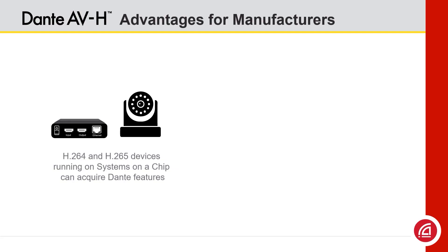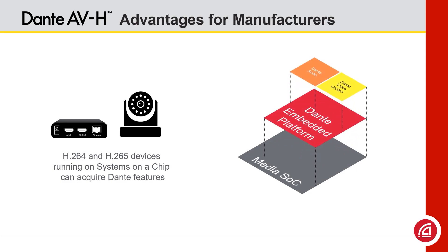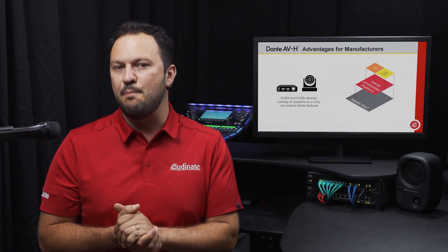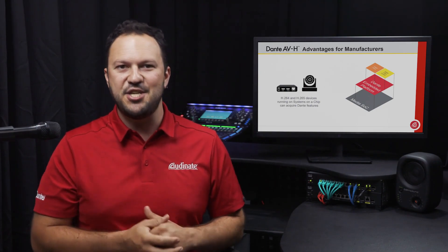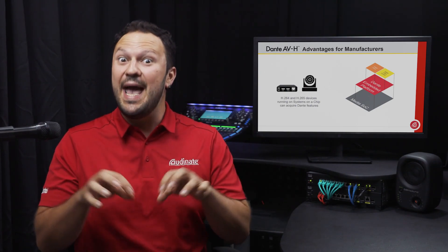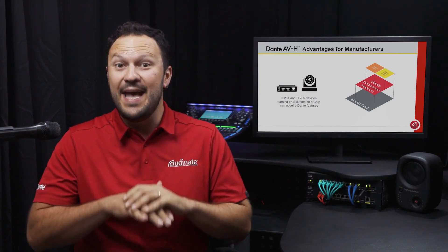If you're a manufacturer interested in Dante AVH, the implementation is simple and straightforward. Our experienced engineers have prepared an example API that can easily be accommodated in the firmware of your system-on-a-chip, enabling Dante AV features into H.264 and H.265 cameras, video encoders and decoders. As Dante embedded platform-based solutions don't require additional hardware, we offer Dante AVH as a feature that can be added into your products at any time.